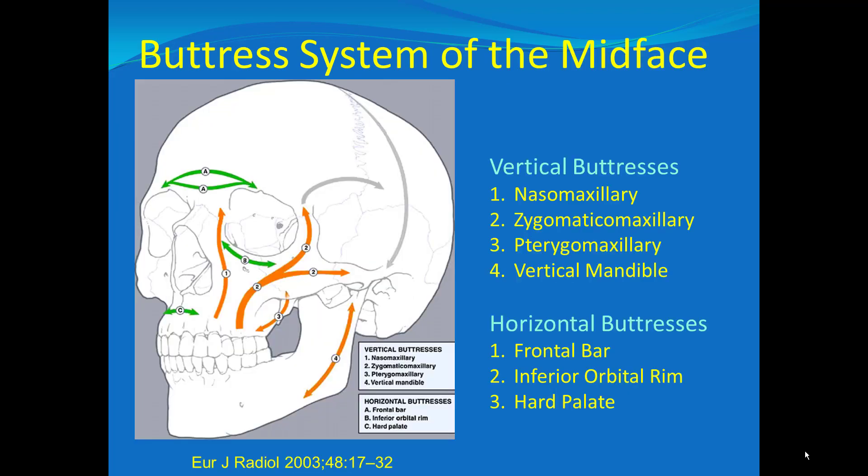The importance of facial fractures in part has to do with the involvement of the buttresses. The facial buttresses are the harder bone within the facial bones. The muscles attach to these areas and pull on these areas, which gives the face its ability to function, including things like the muscles of mastication. So if any of these buttresses are fractured, they need to be repaired in order to maintain the structural integrity of the face.